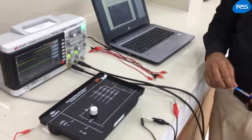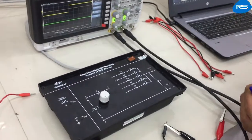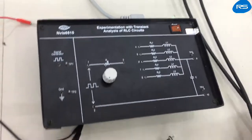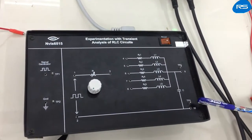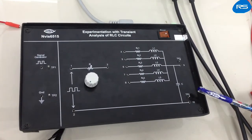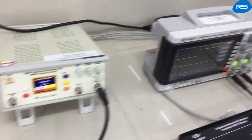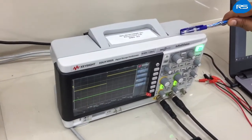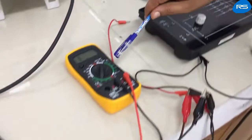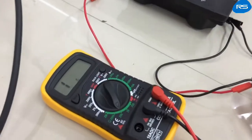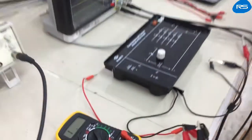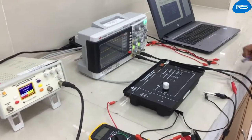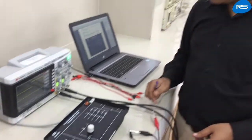We have an RLC circuit kit for transient analysis. In order to perform the experiment, we need a function generator, a digital oscilloscope, a multimeter to measure resistances, and some patch cards and connecting cables.